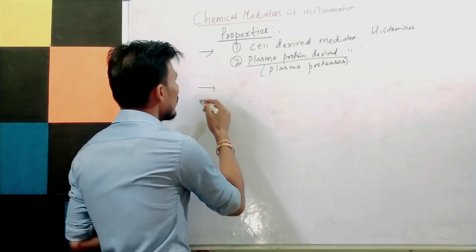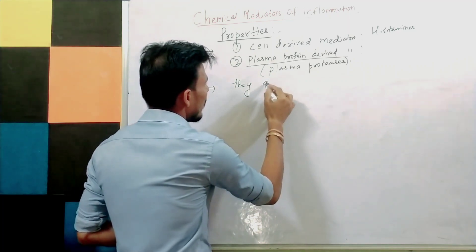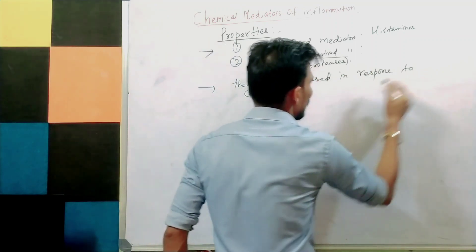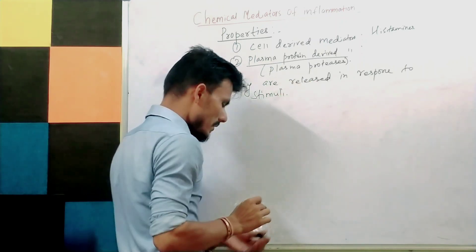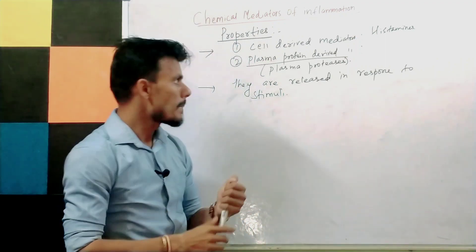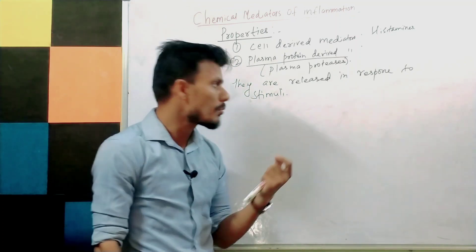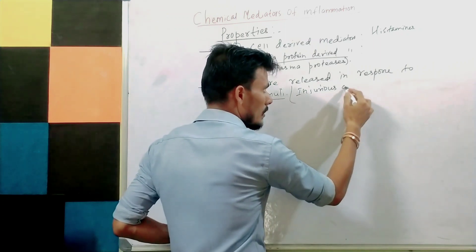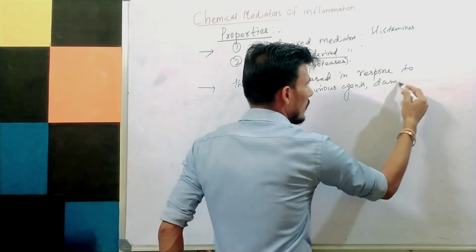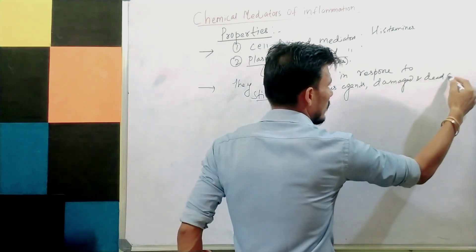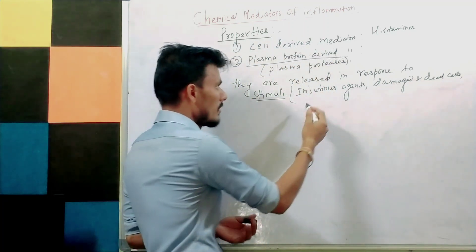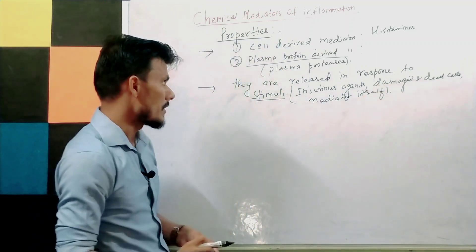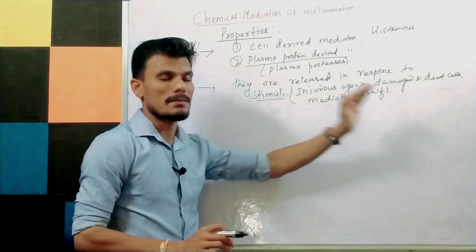The next property is that chemical mediators are released in response to stimuli. As we saw in the definition, when the cell is attacked by some stimuli these chemical mediators are released and mediate the process of inflammation. That stimuli may be the injurious agent, the etiological agent causing damage to the cell, damaged and dead cells, or the chemical mediators themselves can act as stimuli causing activation of other chemical mediators.